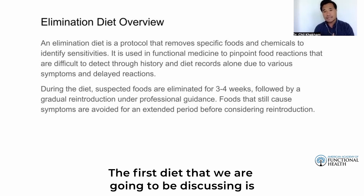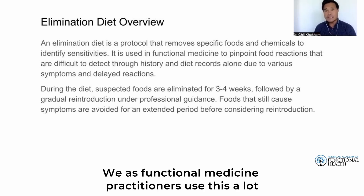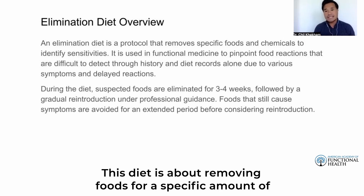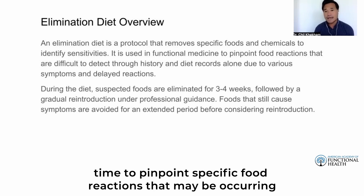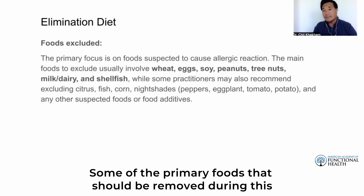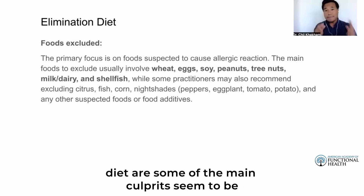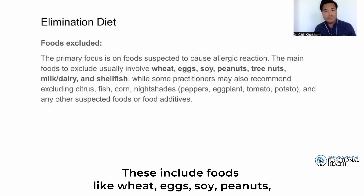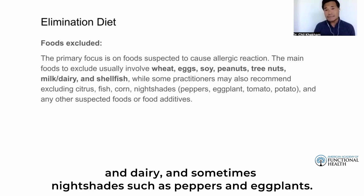The first diet we are going to discuss is the elimination diet. We as functional medicine practitioners use this a lot with our patients. This diet is about removing foods for a specific amount of time to pinpoint specific food reactions that may be occurring. Some of the primary foods that should be removed are the main culprits seen to be reactive in people, including wheat, eggs, soy, peanuts, dairy, and sometimes nightshades such as peppers and eggplants.